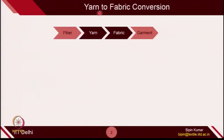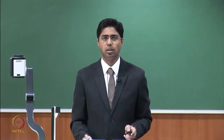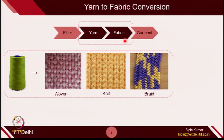Knitting is nothing but a process of converting yarn to fabric. When we talk about yarn to fabric conversion, we have 4 basic processes in textile: fiber to yarn, yarn to fabric, fabric to garment. Knitting basically relates to the conversion of yarn to fabric. When you talk about conversion of yarn to fabric, we have different means by which a single individual yarn can be converted to different types of fabric structure, and knit is one of those structures. You have a yarn which you make from fibers, and with the help of different fabric-making technologies, you convert it into different fabric structures — some of them are woven, knitted, and braided.